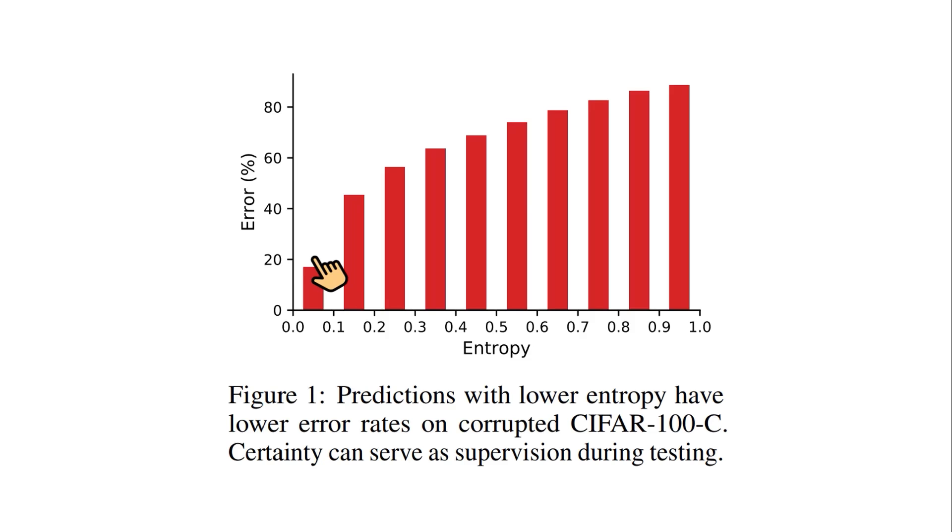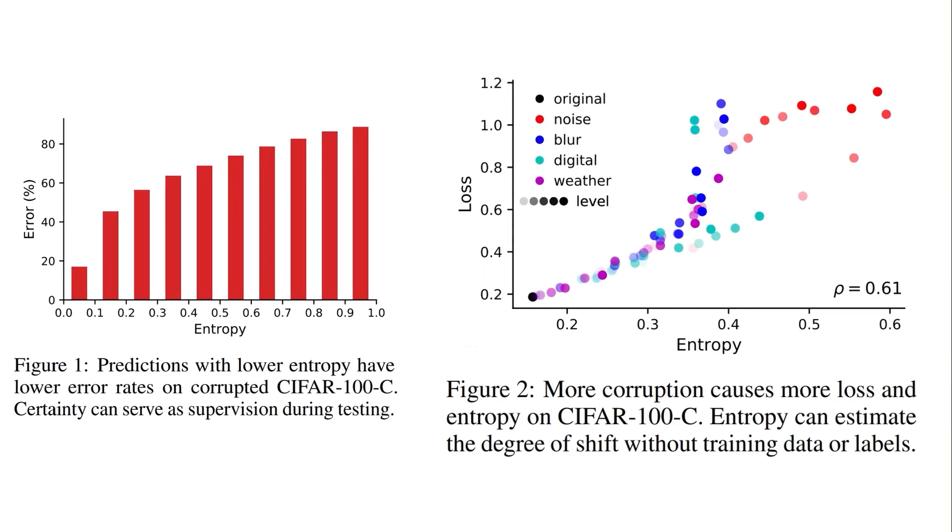In addition they have another figure that they have applied different sorts of corruptions like adding noise on the red color or blur on the blue color or different weather conditions on the purple and digital. But the thing that is interesting is that they have applied it with different levels of severity. But one thing that we can also see here is that as we increase the severity of these corruptions, the entropy and loss function both of them become higher. So that also shows that there are some correlations between the loss and the entropy.